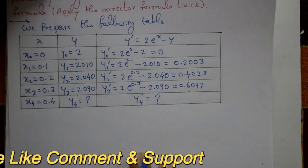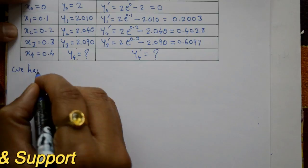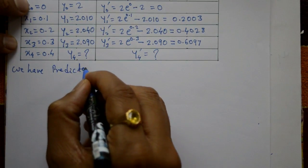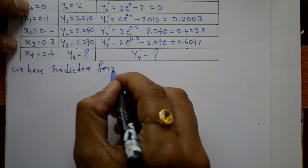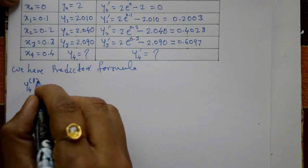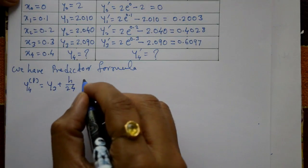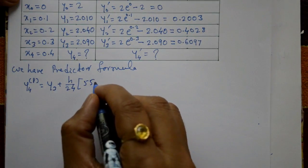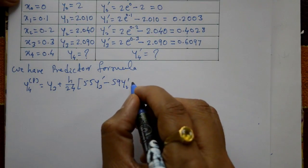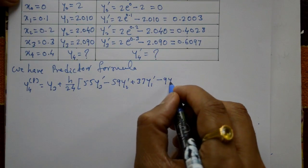Now, using the Adam-Bashforth method, the predictor formula is: y4_p equals y3 plus h over 24 into (55 y3-dash minus 59 y2-dash plus 37 y1-dash minus 9 y0-dash).